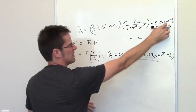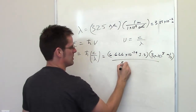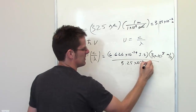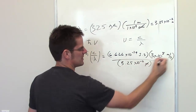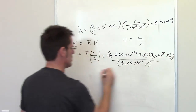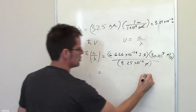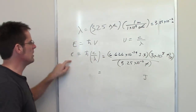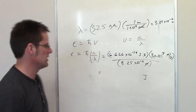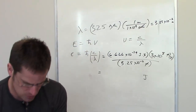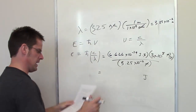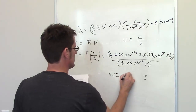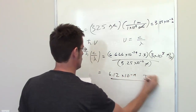Substituting 3.25 times 10 to the negative 7th meters in for wavelength, the meters cancel each other out, the seconds cancel each other out, and I'm left with joules — which is indeed a unit of energy. Plug and chug with your calculators, and we get a final answer of 6.12 times 10 to the negative 19th joules.